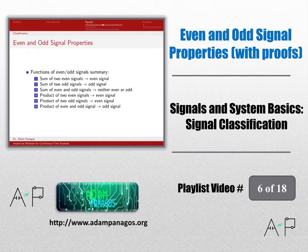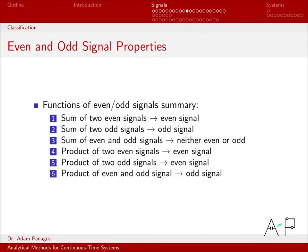We've been looking at symmetry properties of signals — things like even and odd in the case of real signals, and conjugate symmetric signals in the case of complex valued signals. Now let's take a look at a handful of properties that are useful when dealing with even and odd signals. This list of properties covers things like: what happens if I add two even signals together, what happens if I add two odd signals together, and so on. We're going to quickly work through each one with a small proof.